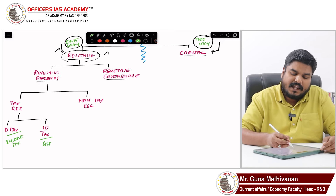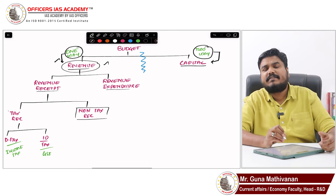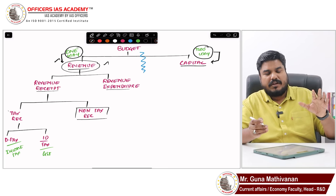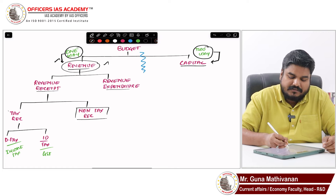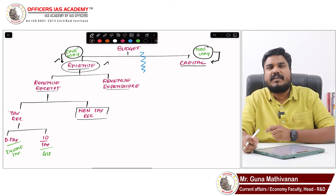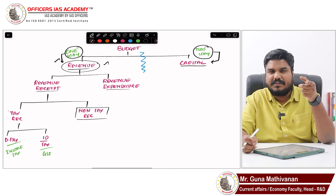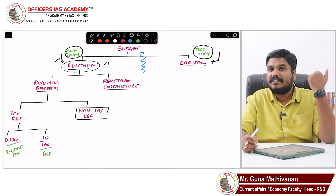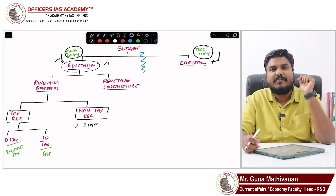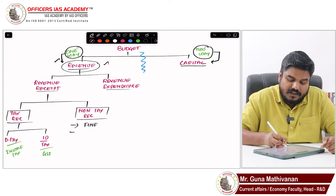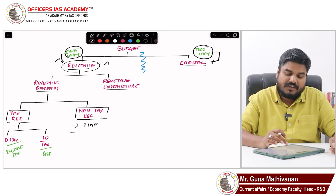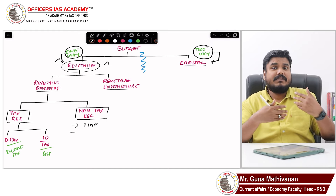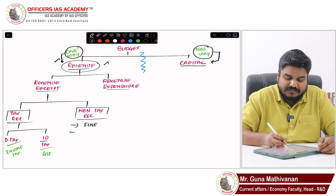Now, what comes under non-tax receipt? Non-tax receipt is money the government receives through means other than taxation, in a one-way manner. For example, fine — if you are driving without a helmet and the police catches you, you pay a fine; the government will not give that money back. Similarly, fee — if you are applying for a license, you pay a fee to the government and the government will not give that back. So fine and fee are examples of non-tax receipts.